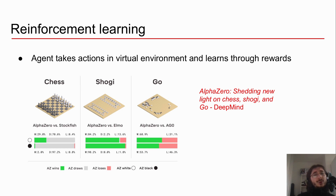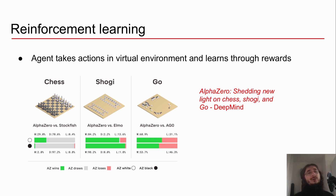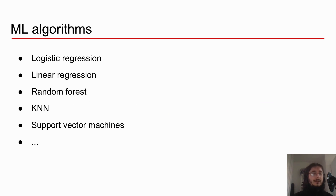If you want to know more about AlphaZero, you can check out the article 'Shedding New Light on Chess, Shogi and Go' — there's a link in the description below. The takeaway point is that with reinforcement learning, you have an agent trained in an environment. To learn how to behave and which strategies to use, the agent goes through a series of rewards if it does well and punishments if it does poorly. As I said, we will be focusing mainly on supervised learning.